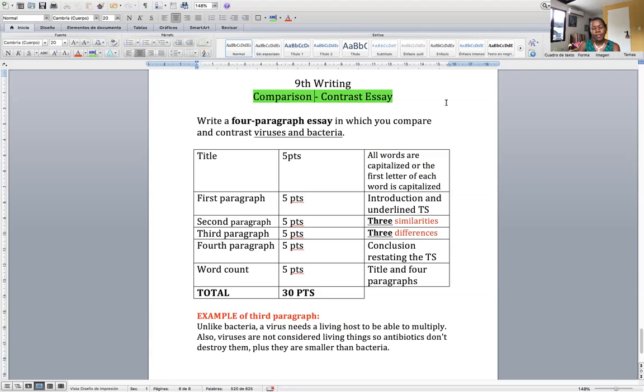Your second paragraph needs to list three similarities. If you want an example of a paragraph listing three similarities, watch the eighth grade video, they were given an example of paragraph number two. Your third paragraph needs to list three differences and here I am giving you an example of what your third paragraph could look like. That's worth five points too.